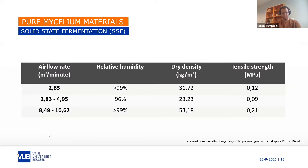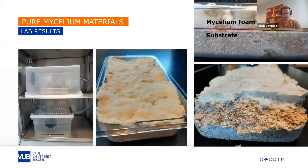Here you can see how fluctuation in airflow rates and relative humidity affects dry density and consequently also the tensile strength of the material. This data is from Ecovative, a company which is very innovative in the space of mycelium materials.